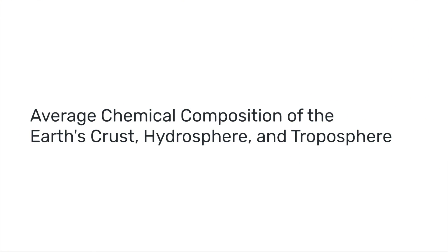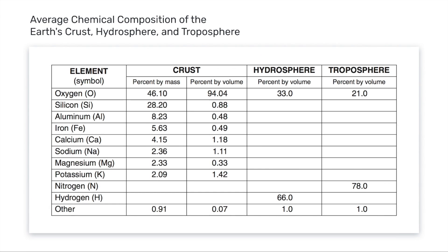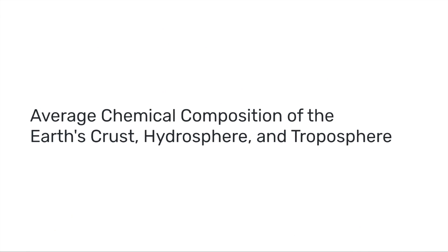Let's take a look at the average chemical composition of the Earth's crust, hydrosphere, and troposphere. This table can be found on page 1 of the Earth Science Reference Tables. Before we look at the chart itself, let's break down the title of the chart so that we better understand what we're looking at.